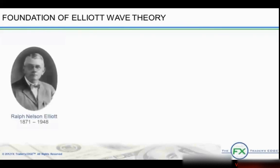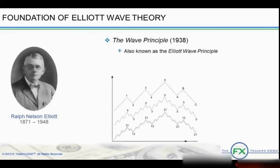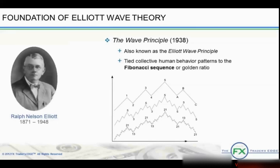Elliott's work was published in 1938 in a monograph titled The Wave Principle, which has come to be known as the Elliott Wave Principle. He tied these patterns of collective human behavior to the Fibonacci sequence, or golden ratio, well known by mathematicians and scientists. There will be more on Fibonacci later in this and following modules.